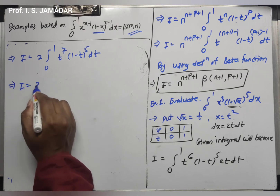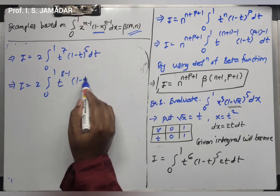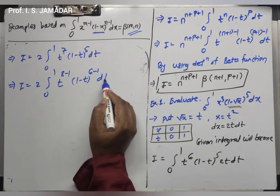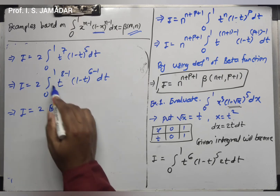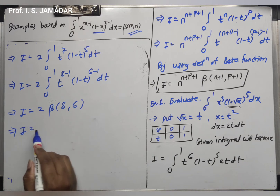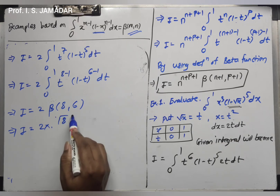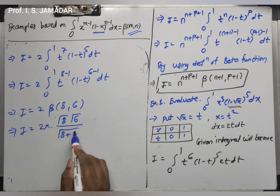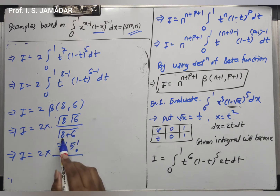Writing t⁷ as t^(8-1) and (1-t)⁵ as (1-t)^(6-1), and using the definition of the beta function, this integral equals beta(8, 6). Therefore I equals 2 times beta(8, 6). Using the relation between beta and gamma, beta(8,6) equals gamma(8) times gamma(6) divided by gamma(14). So I equals 2 times 7! times 5! divided by 13!.